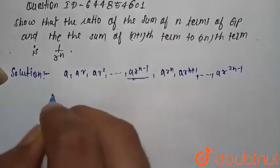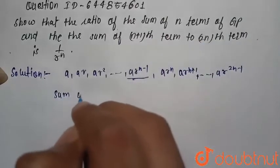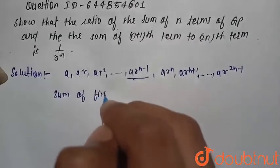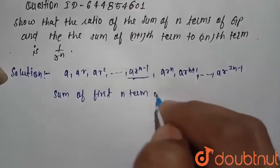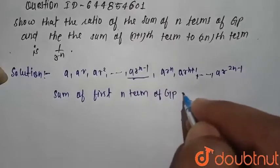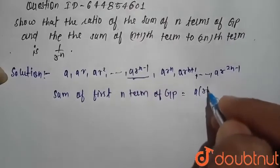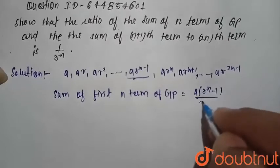So first we find sum of GP. We know that sum of first n terms of GP is equal to a into r raise to power n minus 1 divided by r minus 1.